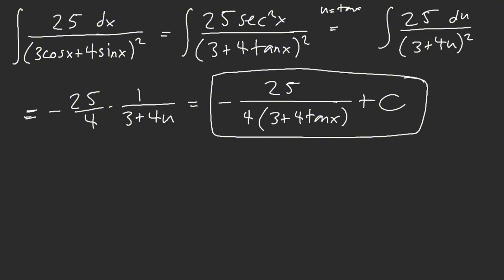Multiply top and bottom by secant square of x. And I see 3 plus 4 tan x. Okay. And then just simply let u equal tan x. You could let u equal 3 plus 4 tan x. That would be faster. I was just lazy.